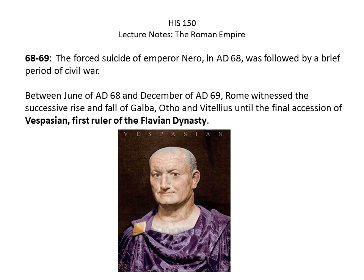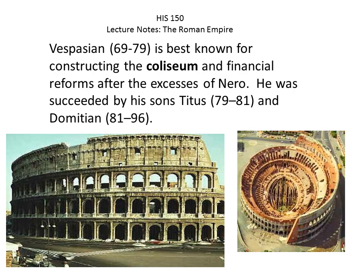After Nero's suicide, three emperors — Galba, Otho, and Vitellius — rose and fell quickly. Then Vespasian came in as the first ruler of the Flavian dynasty. He was a good, solid ruler, best known for constructing the Colosseum and implementing financial reforms that saved Rome from the excesses of Nero. Vespasian was succeeded by his son Titus, who ruled only two years, and then Domitian, who ruled another fifteen. These three men formed the Flavian dynasty.